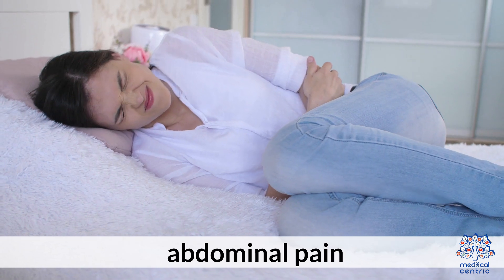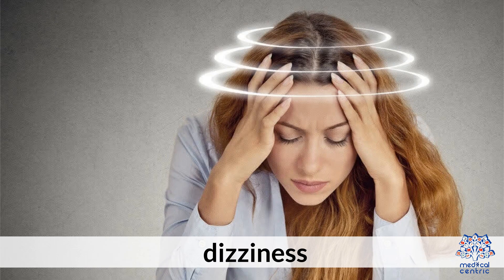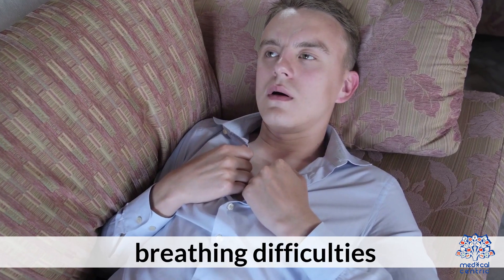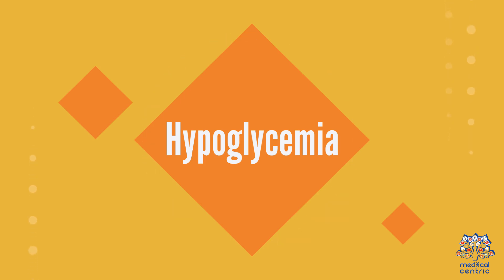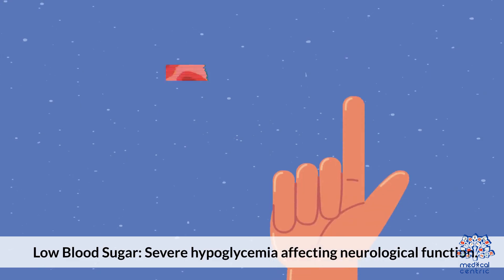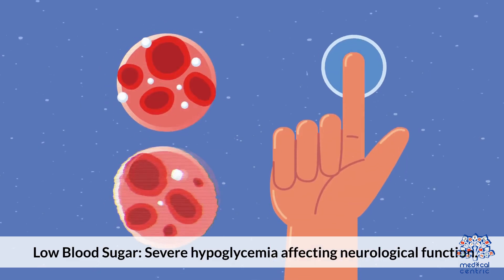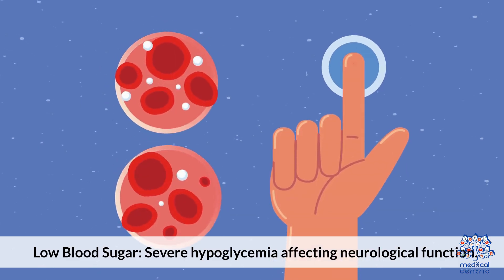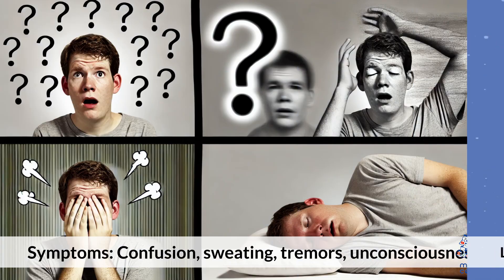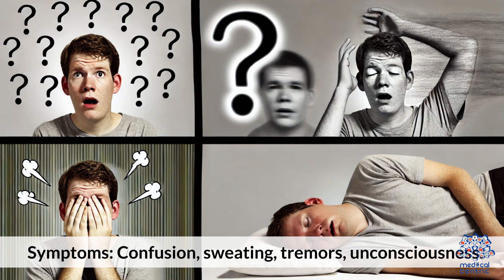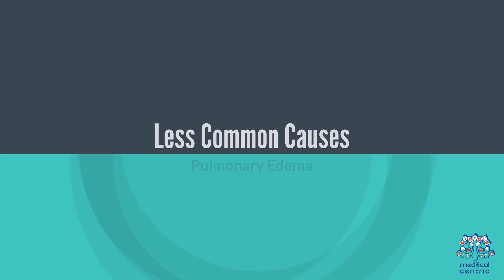Symptoms of poisoning include vomiting, abdominal pain, dizziness, and breathing difficulties. Hypoglycemia: Severe low blood sugar affecting neurological function. Symptoms include confusion, sweating, tremors, and unconsciousness.